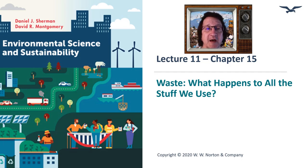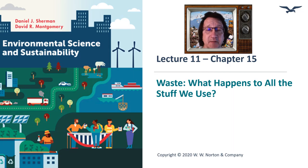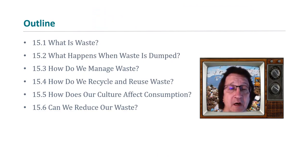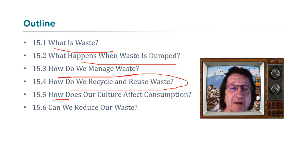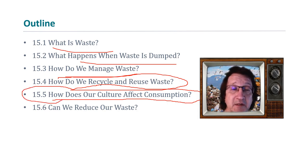This is lecture 11 of environmental science, covering chapter 15 on waste. The outline includes what waste is, what happens when waste is dumped, how we manage it, the role of recycling and reuse, and how our culture affects consumption and waste production.